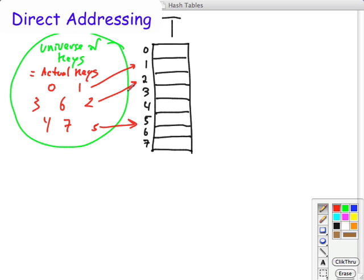If something has key 2, go to position 2. If something has key 5, go to position 5. And this of course is a very straightforward way to access information.